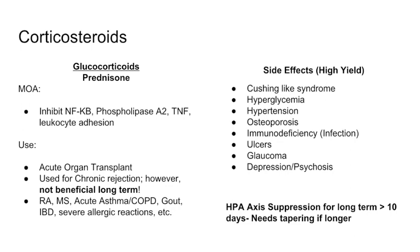One of the more important points: steroids can cause HPA axis suppression. You give somebody glucocorticoids, and their ACTH and CRH — the releasing hormones from the hypothalamus and anterior pituitary — stop being secreted due to negative feedback. So it's very important that after giving corticosteroids for longer than 10 days, you need to taper the dose down. You can't just immediately stop.